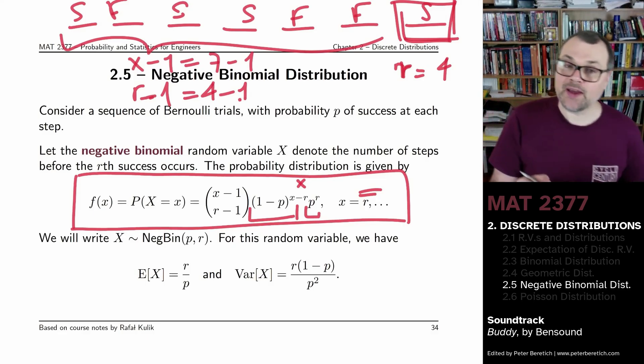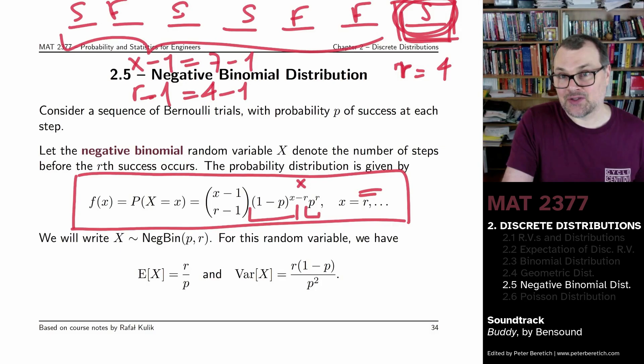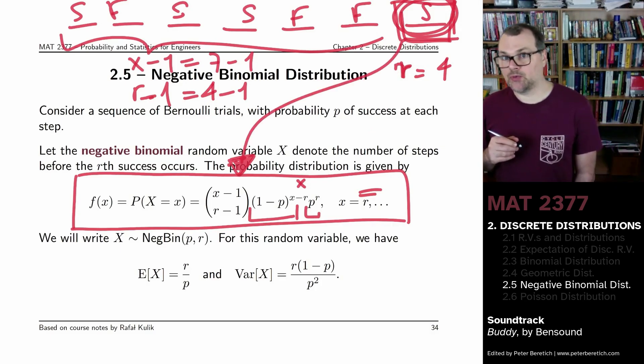So in effect, there are X minus 1 choose R minus 1 ways for you to place R minus 1 successes amongst X minus 1 trials, making sure that that last trial is a success, which is why you get this binomial coefficient.